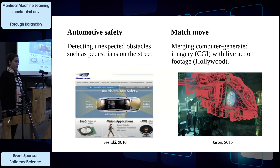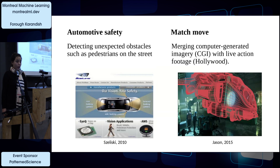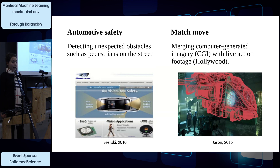Computer vision is used in automated safety systems for detecting unexpected obstacles such as pedestrians on the street—a very famous example is Tesla. They also use MatchMove in Hollywood for merging computer-generated imagery with live-action footage.